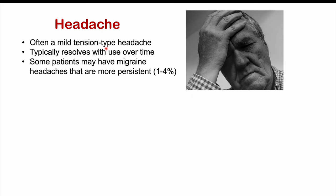However, some patients may have a migraine headache, which would be a unilateral pounding headache. This can be associated with nausea and other symptoms as well. In some cases, these migraine headaches can be persistent. Migraine headaches are likely to affect approximately one to four percent of patients on Wellbutrin. But these more common mild tension type headaches are likely to affect up to a third of patients on this medication.